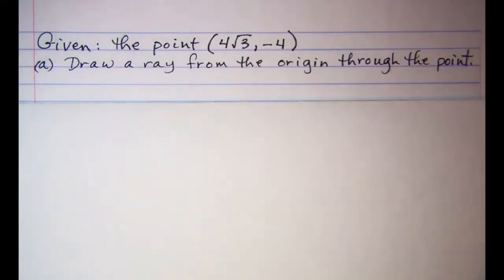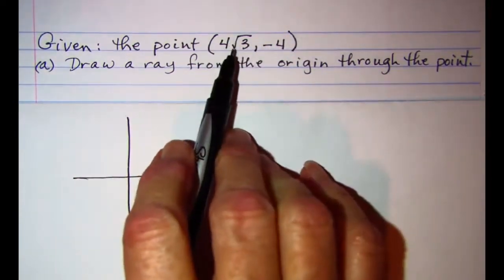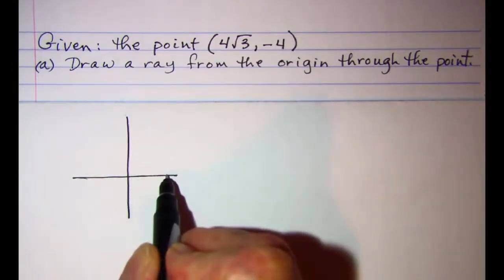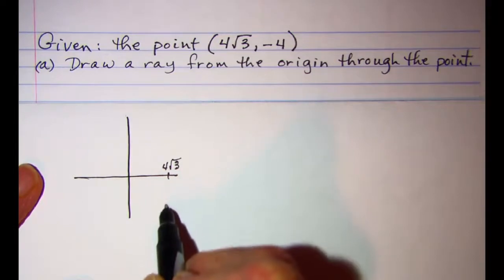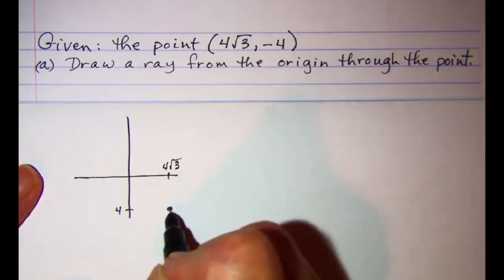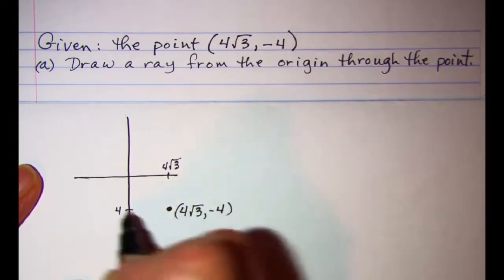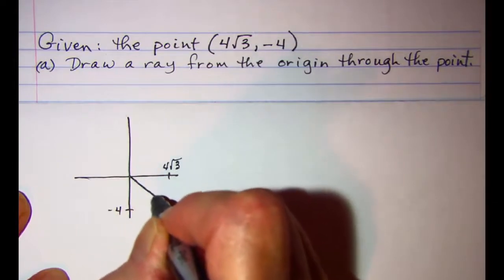This time we're given the point (4√3, −4) and we're asked to draw a ray from the origin through the point. Our x value is positive and our y value is negative, so we go 4√3 to the right and then down 4. Our point would be right here, and we draw a ray from the origin through the point.